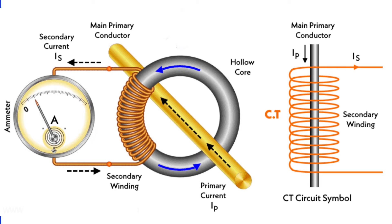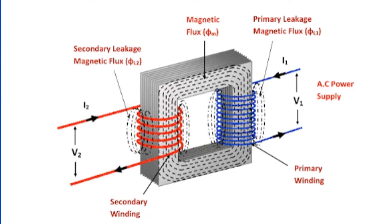But if we consider a situation where the secondary winding of a CT is left open, the circumstances change drastically. In such a scenario, the secondary current will effectively become zero, while the primary current maintains its original value. The result is an imbalance in the system. This imbalance creates a significant net magnetizing MMF, which is concentrated in the core of the CT, launching a considerable amount of flux into the core.